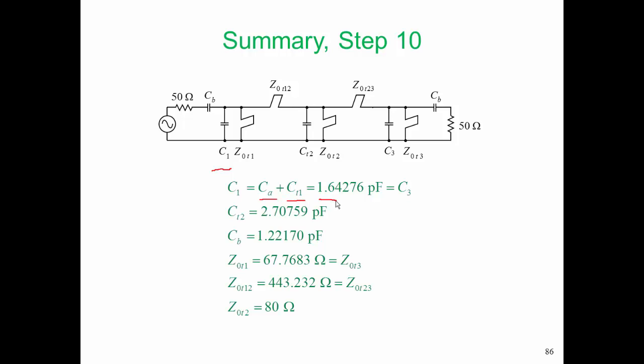It is 1.6 picofarads. So C1 is equal to C3. But now the capacitor in the middle, C2, has its old value of 2.7 picofarads. And CB is 1.22 picofarads. All of these capacitors are very reasonable values of capacitance at 1 gigahertz. We can use surface mount components to realize them. Our characteristic impedances for the shunt stubs are reasonable as well.